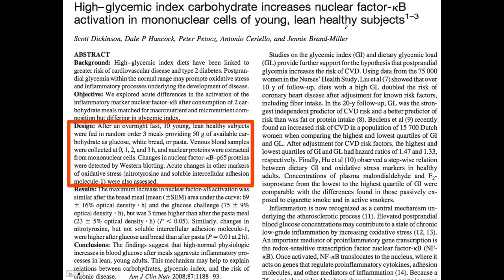So what did they do? After an overnight fast, 10 young, lean, healthy subjects were fed 50 grams of carbohydrate from glucose, white bread, or pasta. Then venous blood draws were taken at zero hours, one hour, two hours, and three hours. The nuclear protein — that is the nuclear factor markers — were extracted from white cells. We have to realize this is not a lot of flames; it's going to be a low-grade but measurable acute response.